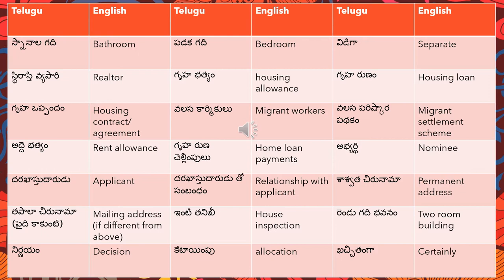'Walasa karmi' means migrant workers — 'walasa' means migrants and 'walasa karmikalu' means migrant workers. 'Walasa parishkara padakam' means migrant settlement scheme.